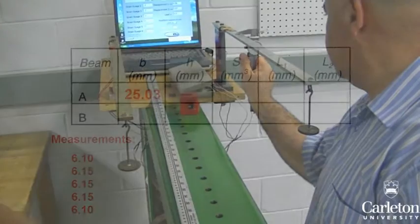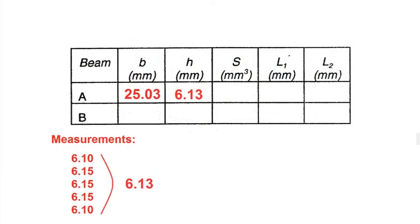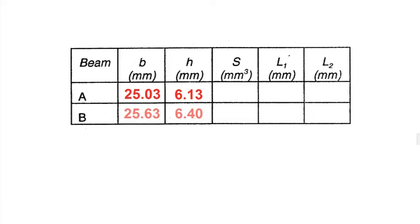Do the same with the thickness or h of the beam, measuring five times and taking an average. Repeat this for the brass beam.